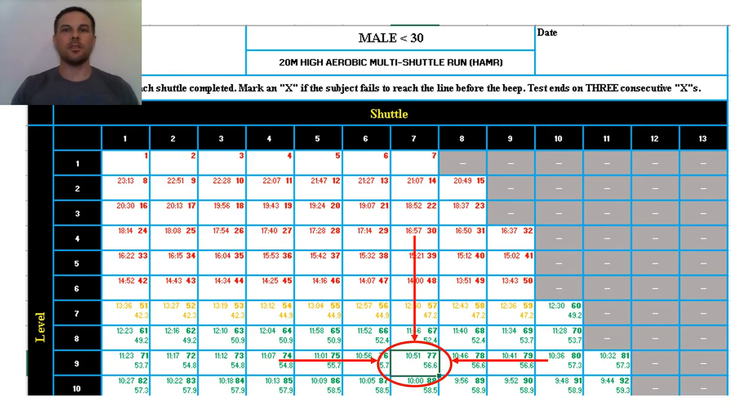As an example, let's say this airman was male, 25 years old. Their corresponding lap sheet would be male under 30. He completed up to level 9 shuttle 7 for a total of 77 completed shuttles. His estimated 1.5 mile run time would be 10:51 and that would be put into AFIMS. The point value for his HAMR would be 56.6.